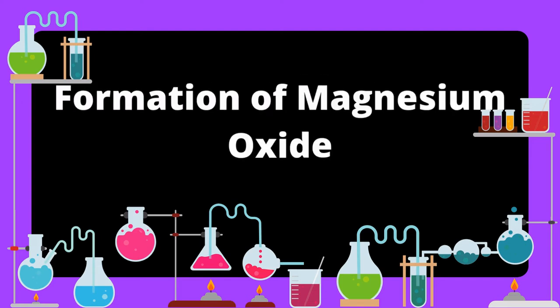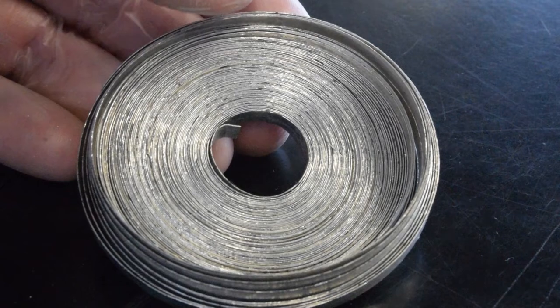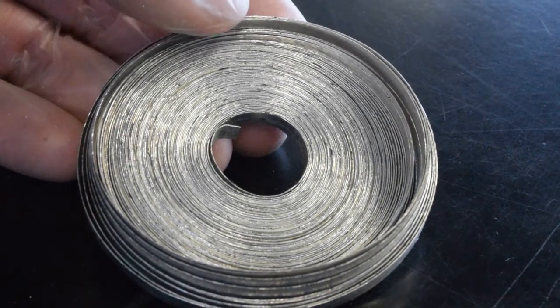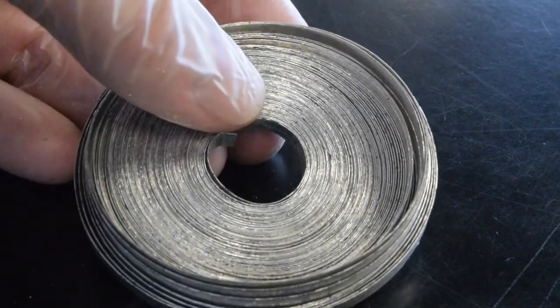In this experiment we're going to take a look at the formation of magnesium oxide. Magnesium is an alkaline earth metal found in group 2 and it's a solid at room temperature typically packaged as a ribbon.